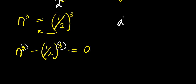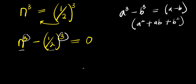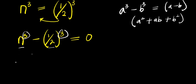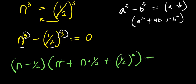So if you have a³ minus b³, this equals (a minus b)(a² plus ab plus b²). And in this case, my a is n and b is 1/2. So for (a minus b) I'm going to have (n minus 1/2), times a² that is n², plus ab that is n times 1/2, plus b² that is (1/2)², and this equals 0.